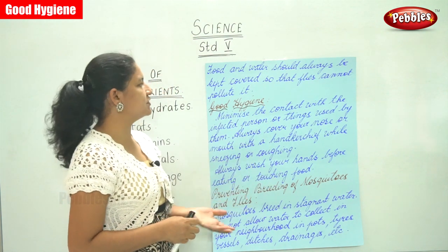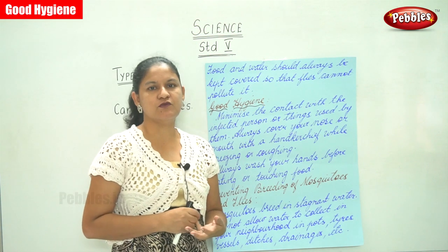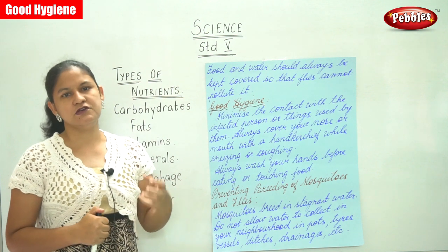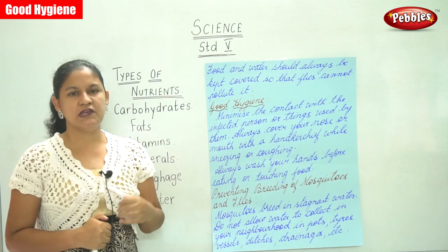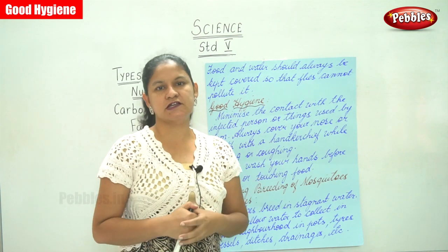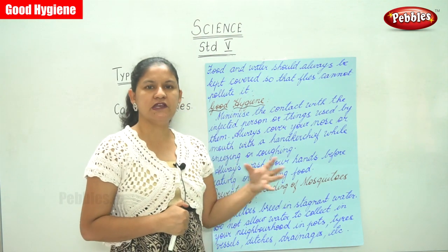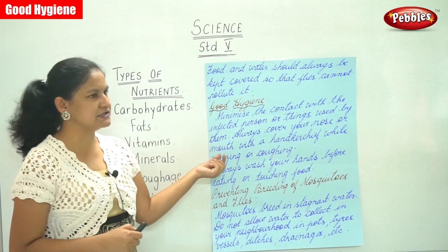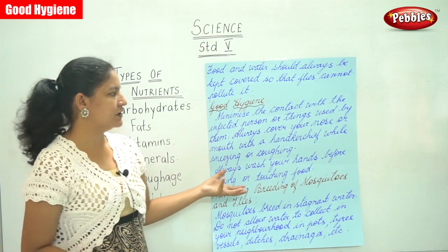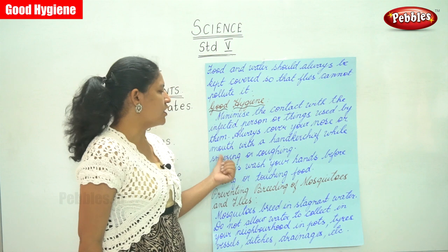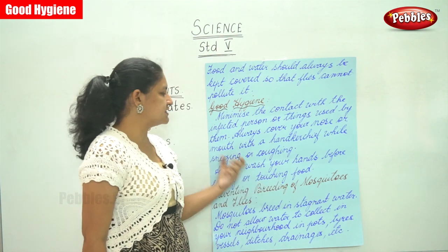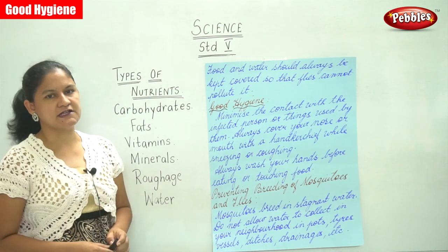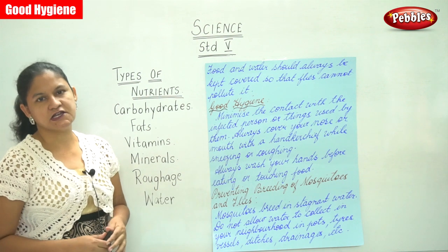So from food and water we move on to the next, that is good hygiene. So what do we mean by good hygiene? We need to maintain personal hygiene and we need to minimize the contact with infected persons or things used by them. Always cover your nose or mouth with a handkerchief while sneezing or coughing. Always wash your hands before eating or touching food.